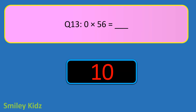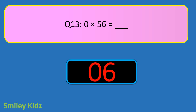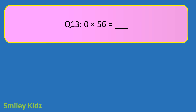Question number 13. 0 times 56 is equal to blank. Your time starts now. And your time is up. The right answer is 0. 0 times 56 is equal to 0.